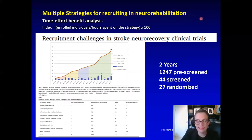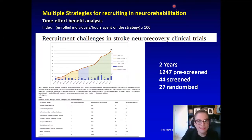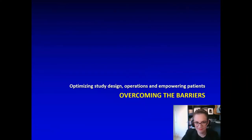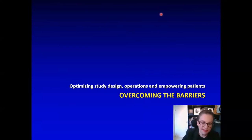We are spending a lot of time and effort to obtain small sample sizes for all trials. We all know that to answer strong questions and meaningful outcomes, we still must make a larger effort to have larger trials. It is clear that we must change our mindsets and foster new alternatives for neurorehabilitation trials by optimizing study design, operations, and empowering patients.